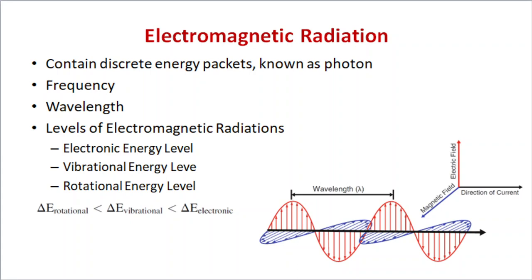The rotational energy level is very quantized and discrete. The difference between rotational energy levels is very small compared to electronic and vibrational energy levels. Rotational energy helps in rotating atoms or spinning electrons during absorption. In terms of energy, rotational energy transitions require the least energy, followed by vibrational, and the highest energy transitions occur at the electronic energy level.